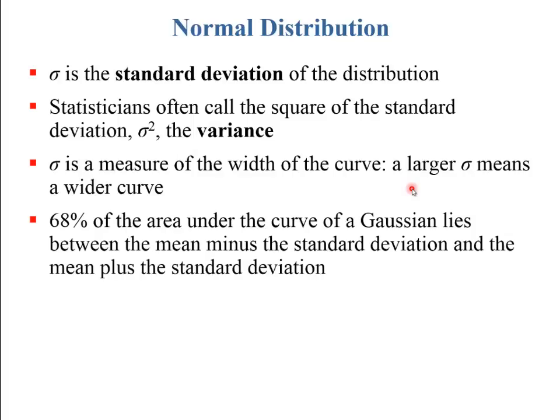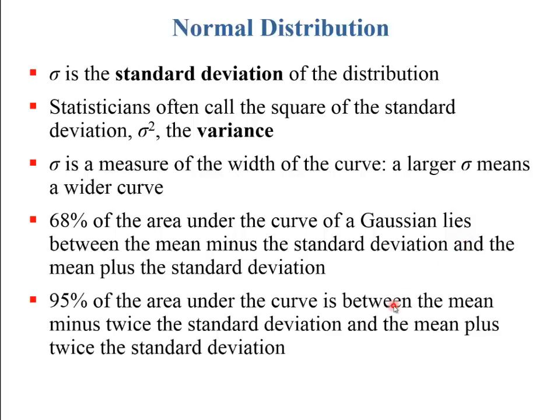In terms of integrating, 68% of the area under the Gaussian curve lies between the mean minus 1 standard deviation and the mean plus 1 standard deviation, and 95% of the area lies between plus or minus 2 sigma. That's where those probabilities come from.